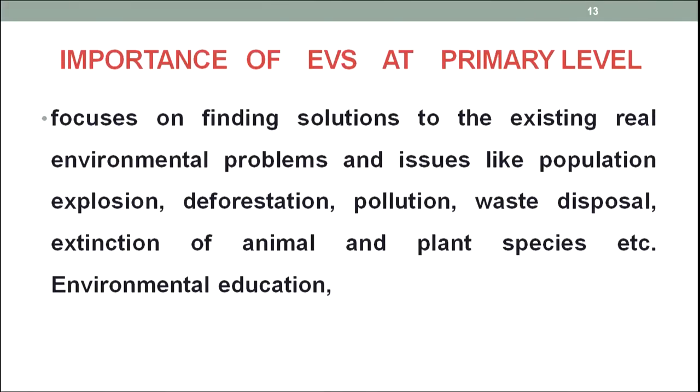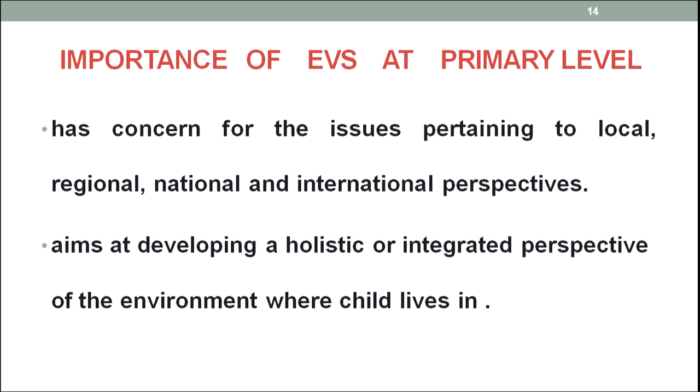Regarding the importance of EVS at primary level — why it should be taught as a way of learning: first, it focuses on finding solutions to existing real environmental problems and issues like population explosion, deforestation, pollution, waste disposal, extinction of animal and plant species, etc. All these negative aspects have taken us in their grip, so there is a pressing need to find solutions. The children must have a concern for issues pertaining to local, regional, national, and international perspectives — for example, pollution is an evil that has spread across local, regional, national, and international domains. The child should see things as a whole rather than as a part.